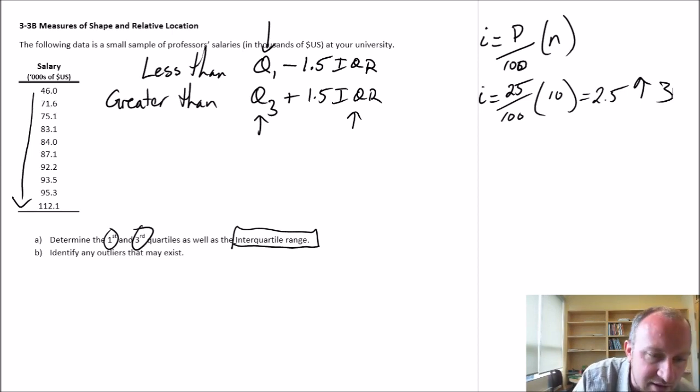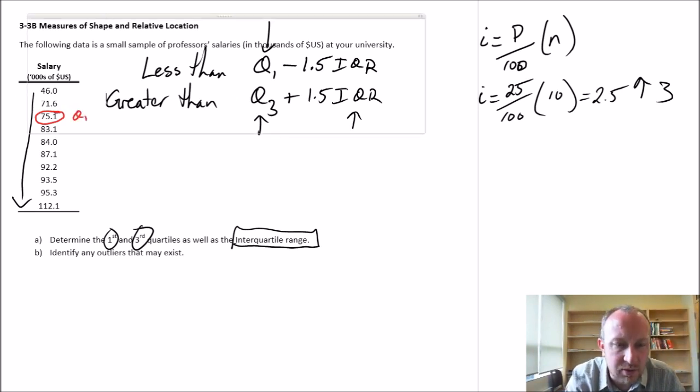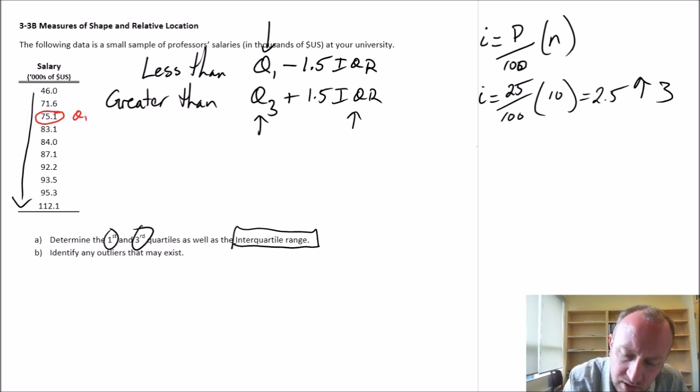And so that's right here. Let's color code this. So there's my Q1. For my Q3, I'm going to reuse this formula. This will be my 75th percentile, so then that's going to be 7.5 which we round up to 8.